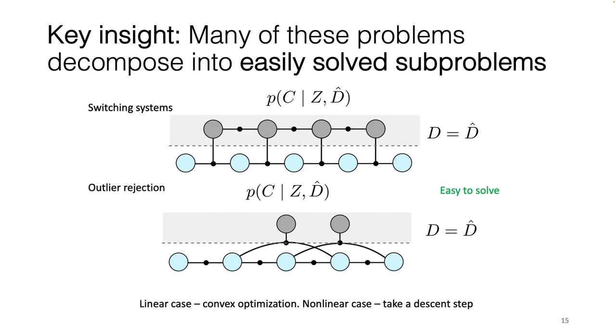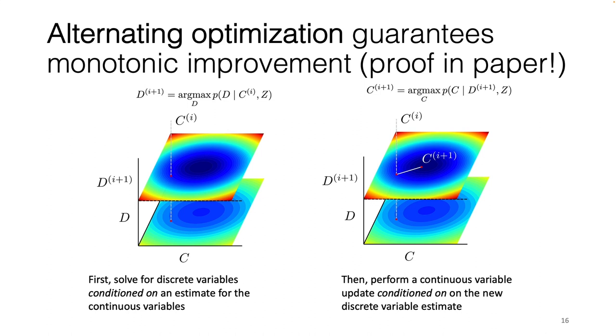If we fix a set of discrete variables, we can always optimize the continuous states efficiently. In the linear case, this might involve convex optimization, or in the nonlinear case, we can simply take a step using something like a trust region method.